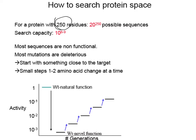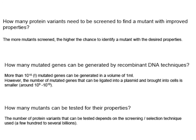There is recent evidence from Manfred Reitz's group that a higher mutation rate of approximately 3 to 5 mutations is better, but you have to screen more. The more mutants screened, the higher the chance to identify a mutant with desired properties. More than 10^15 mutated genes can be generated in 1 ml, but the number that can be ligated into a plasmid and brought into cells is around 10^9 to 10^10. The number of protein variants that can be tested depends on the screening or selection technique used — from a few hundred to several billion.